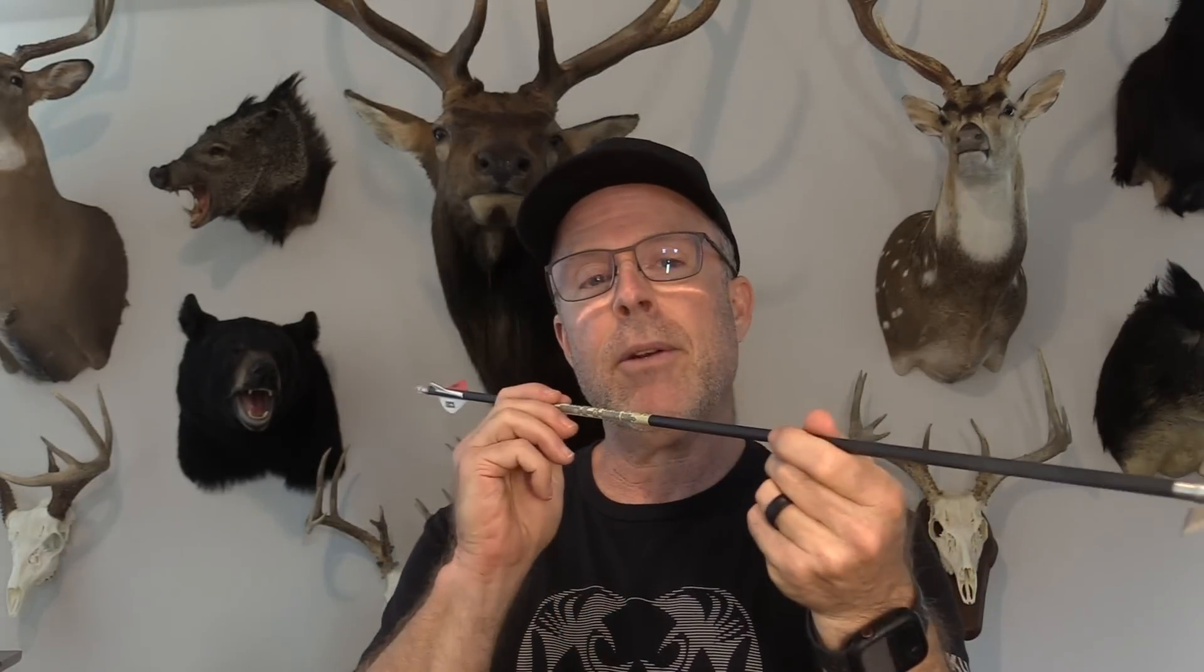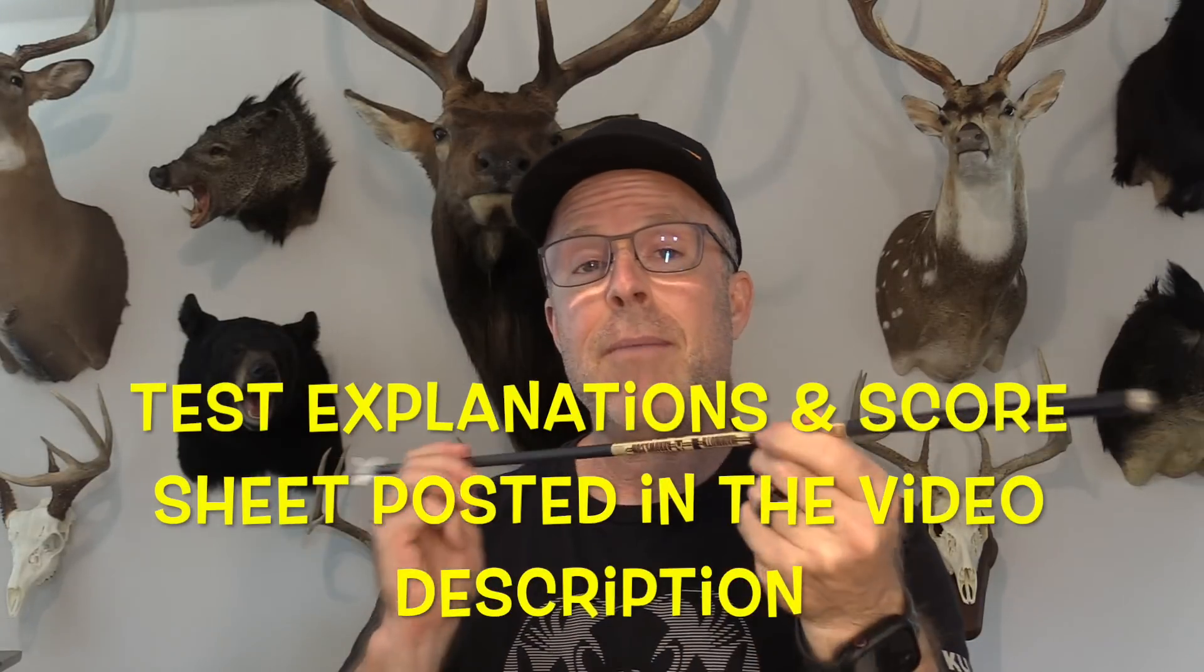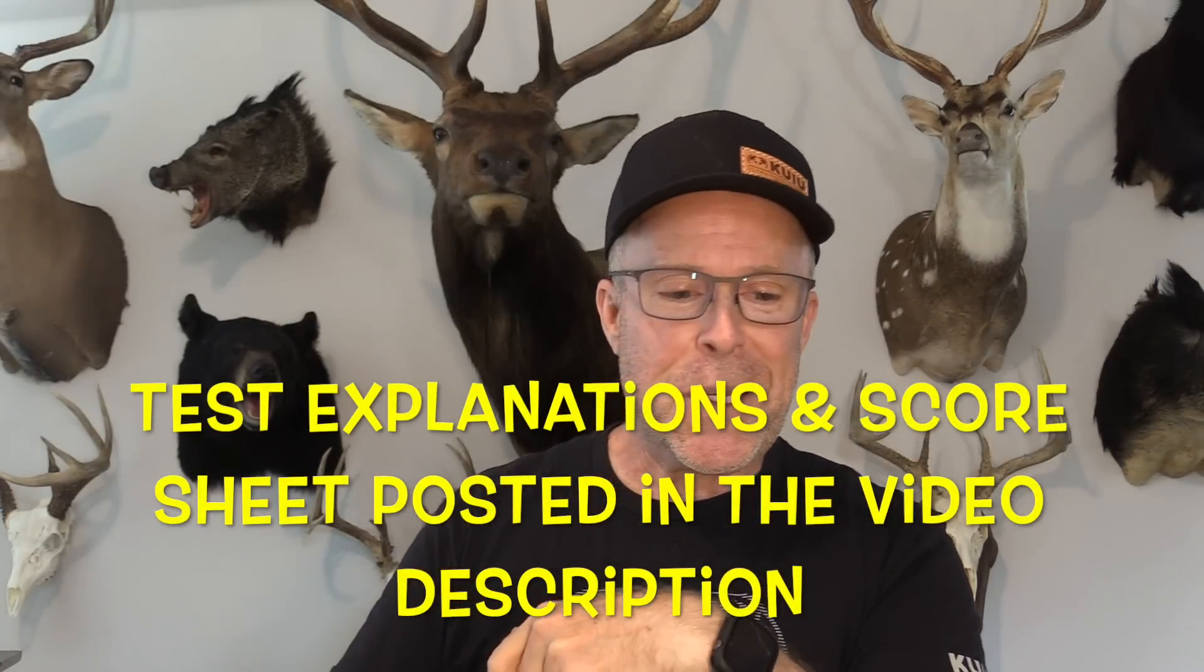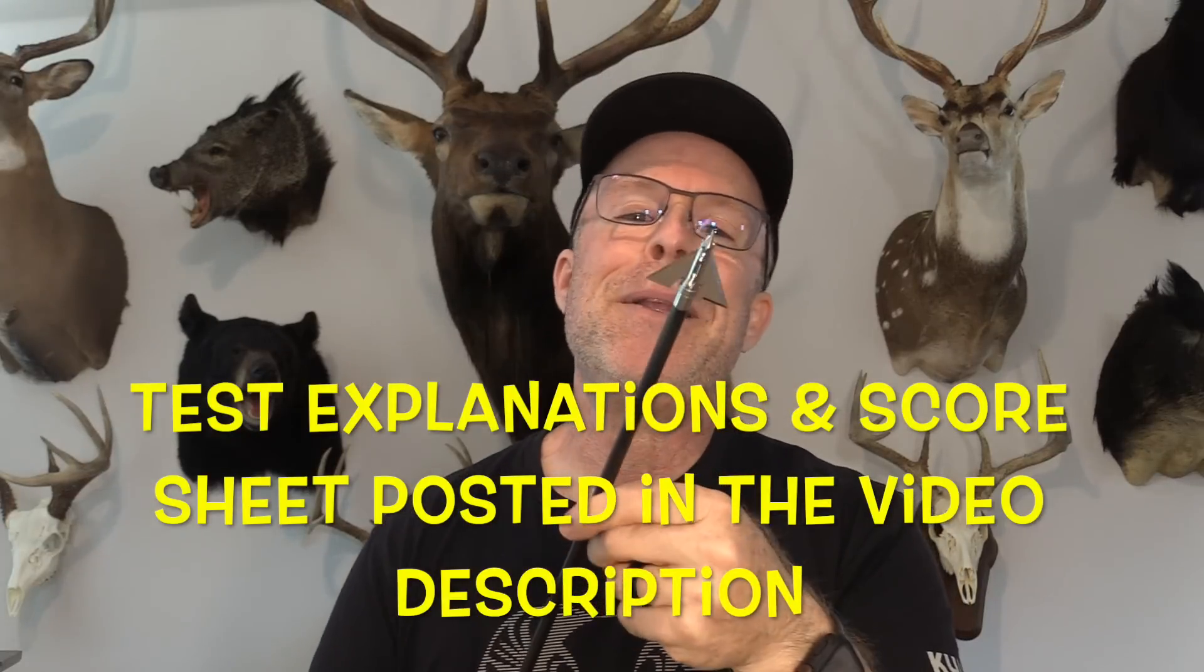For the test I'm going to be using my Bowtech CP28 set at 72 pounds. I'm using Bishop FOC King Arrows for most of the shooting, but for the really hard impact stuff I'm using the Bishop Fad Eliminators because they can handle it. So let's zoom on in here and check out this mean looking Trifecta 150-grain head.